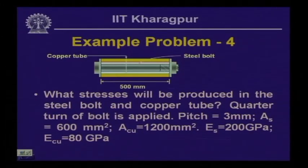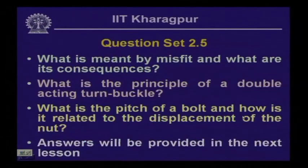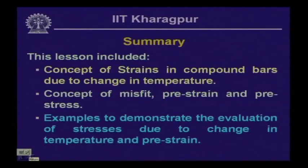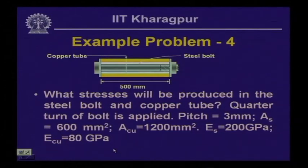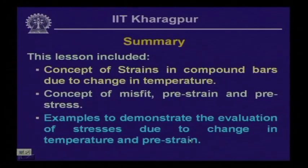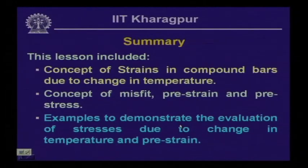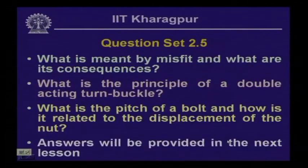We also have a problem involving a steel bolt and copper tube where a quarter turn of the bolt is applied, with pitch 3 mm and cross-sectional area 600 mm², and the stress must be computed. In summary, we have discussed the concept of strain in compound bars due to change in temperature, the concept of misfit, pre-strain and pre-stresses, and examples demonstrating the evaluation of stresses. Questions for next time: What is meant by misfit and what are its consequences? What is the principle of a double-acting turn buckle? What is the pitch of a bolt and how is it related to the displacement of the nut?